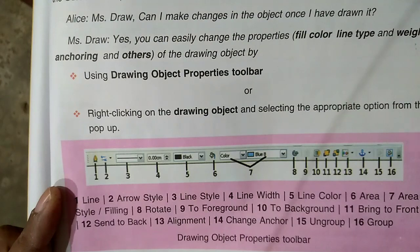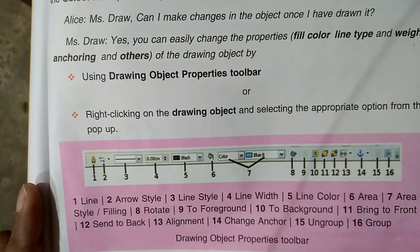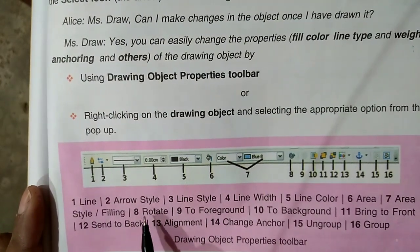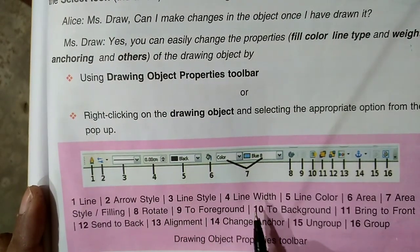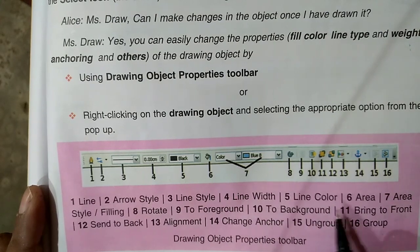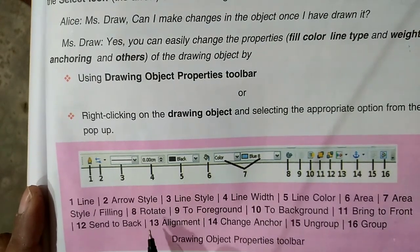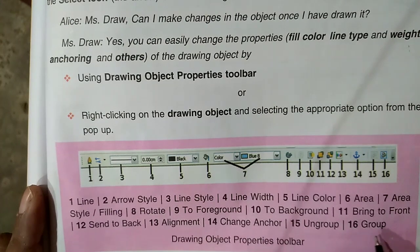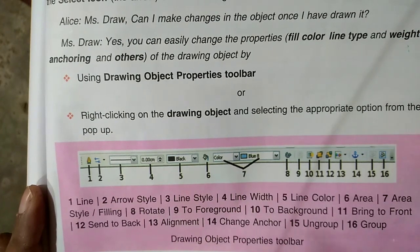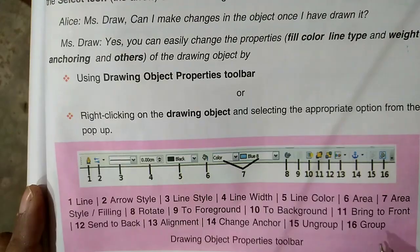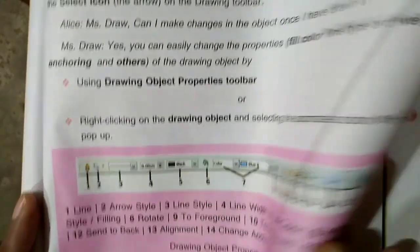Now, the Drawing Object Properties toolbar. It includes: Line, Arrow Style, Line Style, Line Width, Line Color, Area, Area Style, Filling, Rotate, To Foreground, To Background, Bring to Front, Send to Back, Alignment, Change Anchor, and Group.